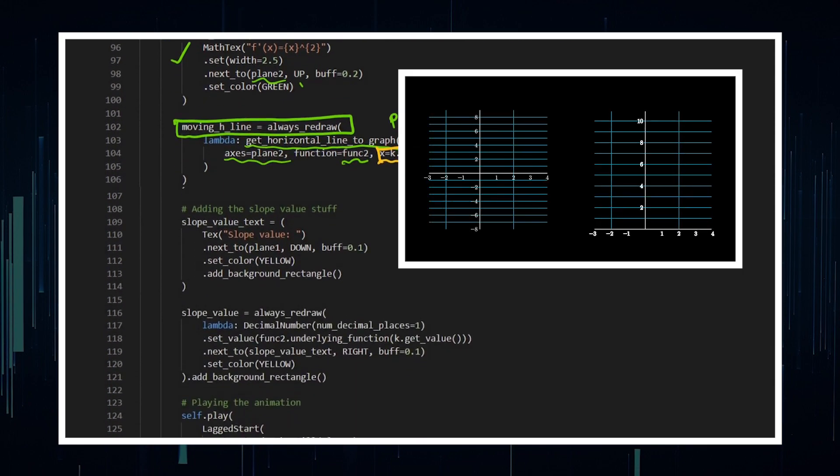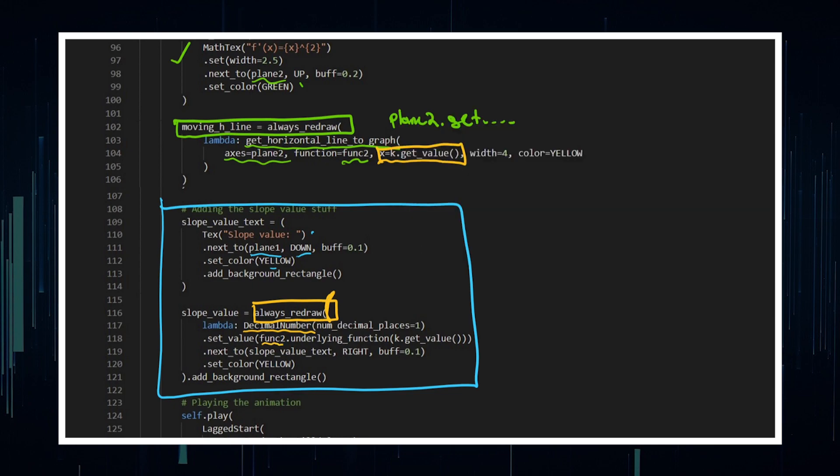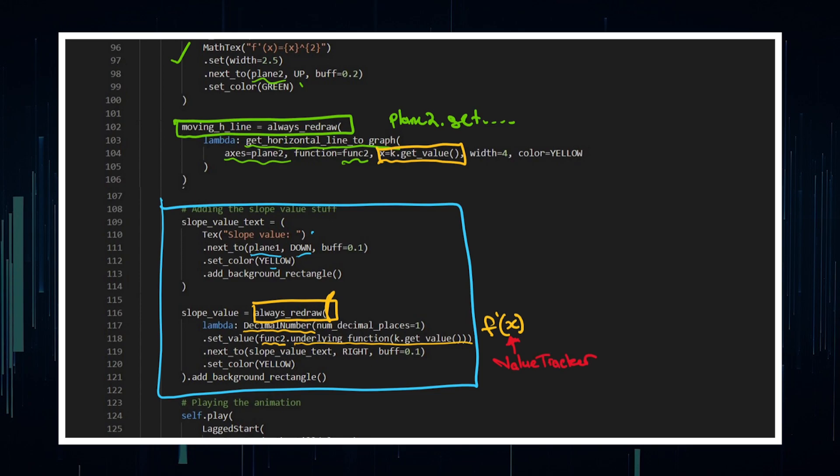Then lastly, I've got some stuff here which is tracking the slope value, where I've got my text, which is slope value, and I'm going to put that next to plane one and down from it. I'm going to set that color to yellow, because that is the color of my secant slope. Then I'm going to add my number, which is constantly updating. So it's always redraw, and it is a decimal number, so it's the class decimal number, where I'm setting the value. And this is within the always redraw, so it's within the updater. Set value to the underlying function of the derivative that's tracked by the value tracker. So it's saying, always stay at the value of f prime of X, where the X value is going to be constantly re-evaluated with the value tracker.